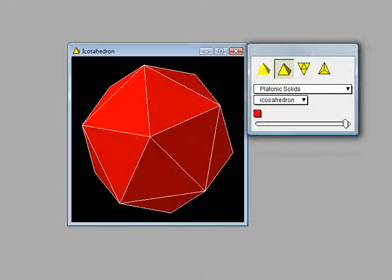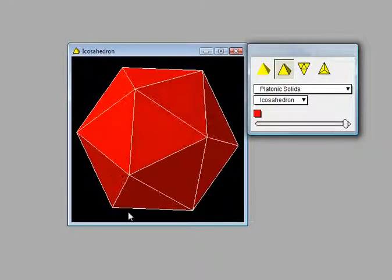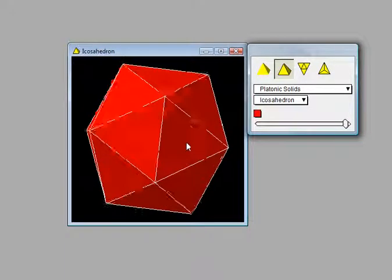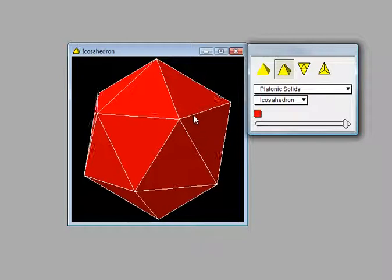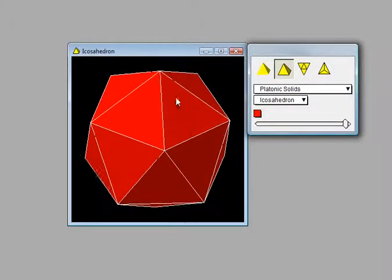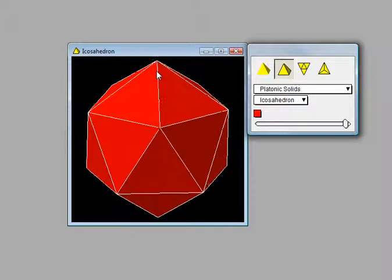Here we have the icosahedron and you'll notice that it is made up of equilateral triangles. There are 20 equilateral triangles and an interesting way of counting those is if you think of this as maybe the North Pole up here.